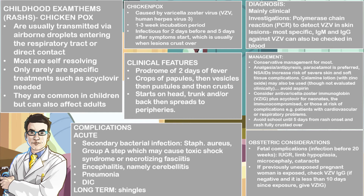Some obstetric considerations: if a mother gets infected with this virus, especially before 20 weeks — because organogenesis happens in the early first trimester — there may be complications such as intrauterine growth restriction, limb hypoplasia, microcephaly, and cataracts. If a previously unexposed pregnant woman gets exposed to varicella zoster virus, you want to check for VZV immunoglobulin G in the blood. If it is negative and it is less than 10 days since the exposure, you want to give her VZV — varicella zoster virus immunoglobulins.